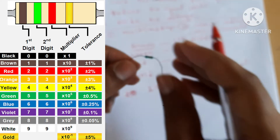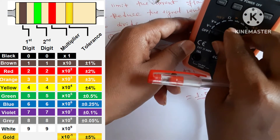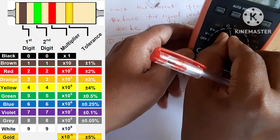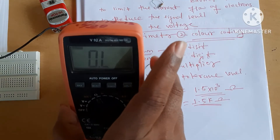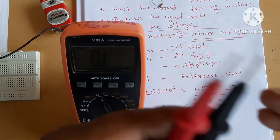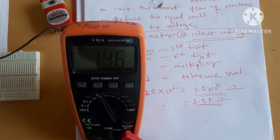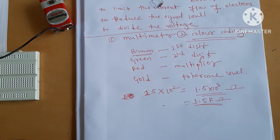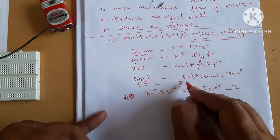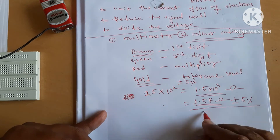Let's verify with the multimeter — it reads 1.5 kilo-ohm resistance, confirming our calculation. The gold band indicates the tolerance level, which is plus or minus 5%. So the actual resistance can vary by ±5% around 1.5 kilo-ohm.